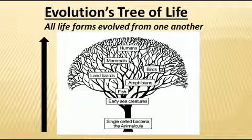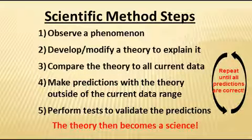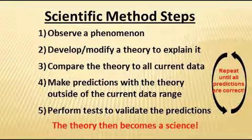To evaluate evolution theory from a scientist's point of view, we need to look at the scientific method. The scientific method has evolved over centuries as a way for scientists to understand phenomena they've observed — something that happens on Earth or in space — develop equations to quantify it, and predict what will happen in the future. It starts with the observation of a phenomenon and trying to understand why it happens.